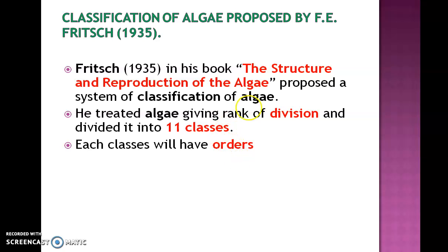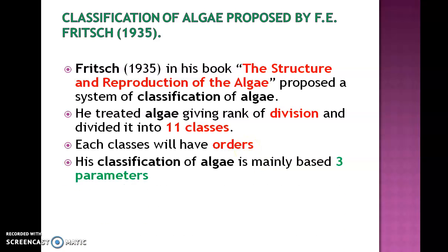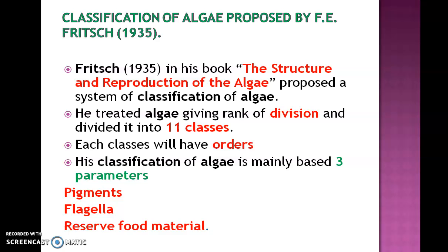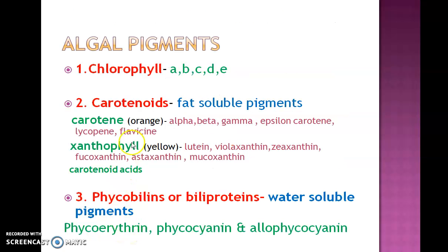Each class is in turn divided into orders. The classification is mainly based on three parameters: the first one is the type of pigments, the second one is the nature of flagella, and the third one is reserve food materials present in the algae.